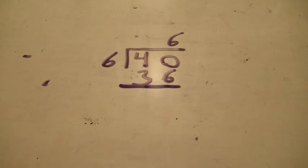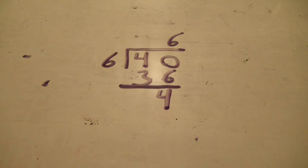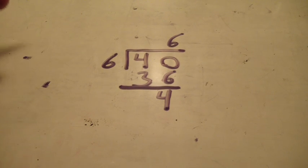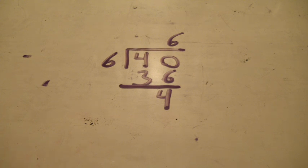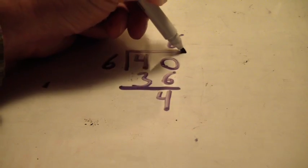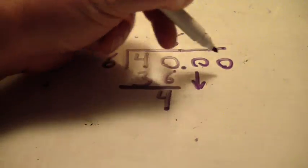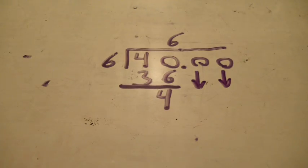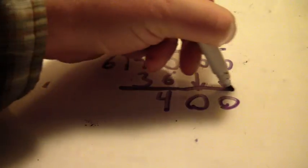Now what we do in this case is bring down sets of two zeros. When we're figuring out square roots and we're doing it by the division method, we need to bring down zeros in sets of two. So we're going to simply do that — sets of two. So there is what we have now.